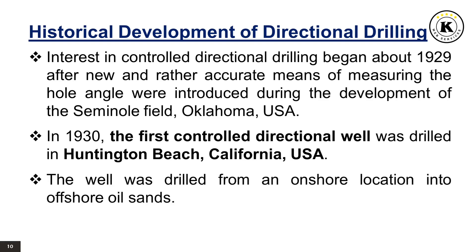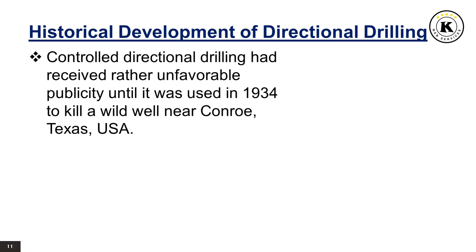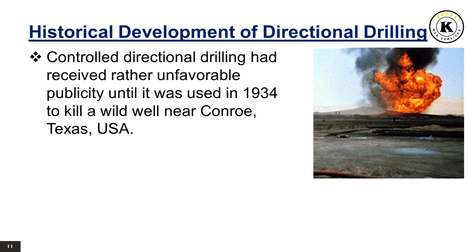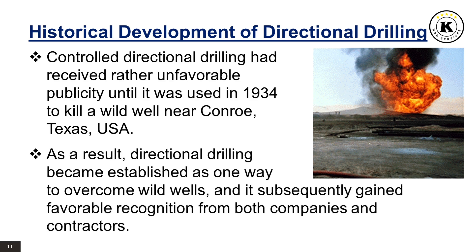The well was drilled from an onshore location into offshore oil sands. Controlled directional drilling had received rather unfavorable publicity until it was used in 1934 to kill a wild well near Conroe, Texas, USA. As a result, directional drilling became established as one way to overcome wild wells, and it subsequently gained favorable recognition from both companies and contractors.